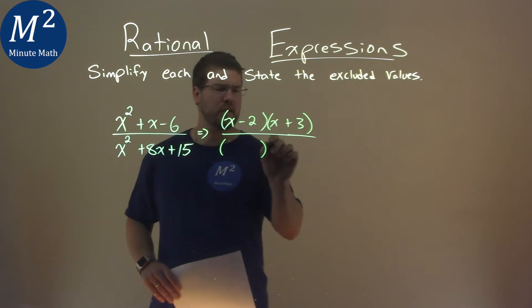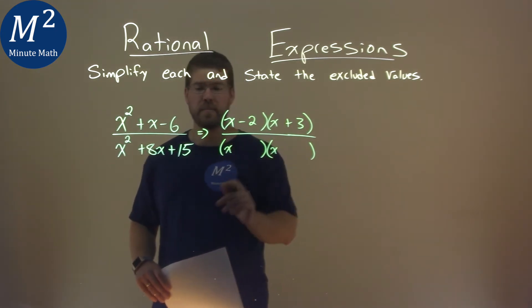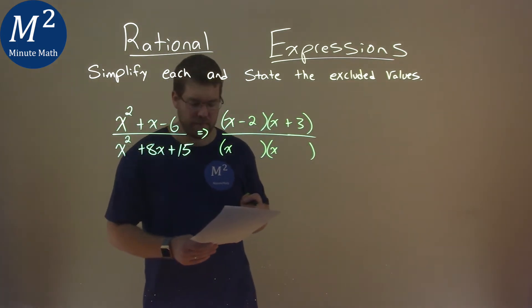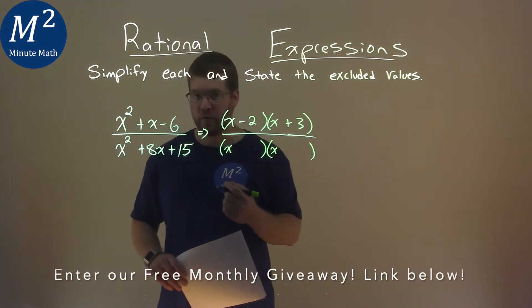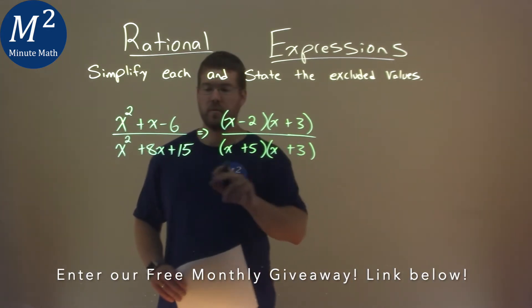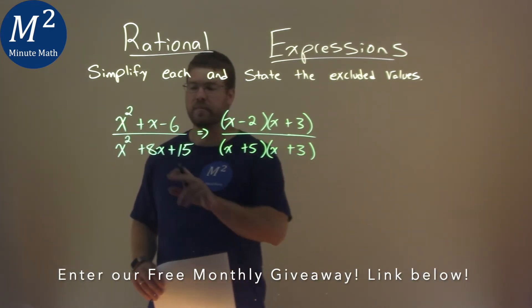Now we're going to do the same thing with our denominator. Can we factor that? What two numbers multiply to be 15 but add to be positive 8? That is a 3 and a 5. We have a plus 5 here and plus a 3. 5 times 3 is 15, and we add them to get positive 8.